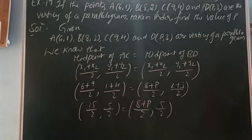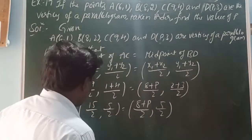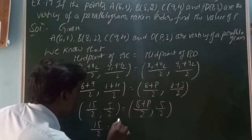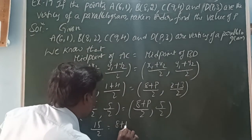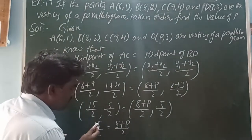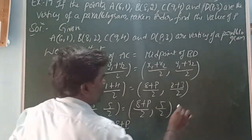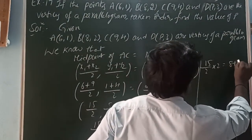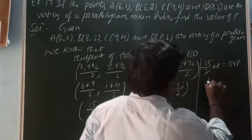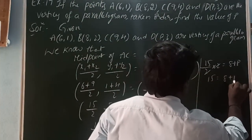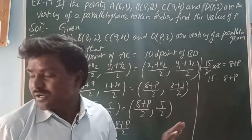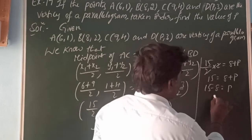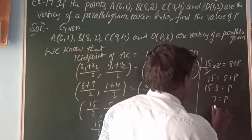Since the two ordered pairs are equal, their coordinates are equal. The first coordinates are equal, so 15/2 equals (8+P)/2. Multiplying both sides by 2: 15 equals 8 plus P. Bringing 8 to the left side: 15 minus 8 equals P. So P equals 7.